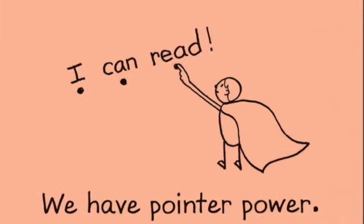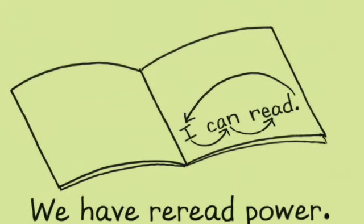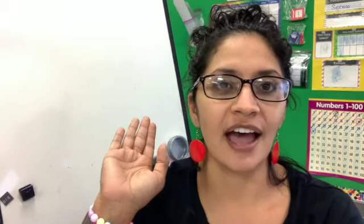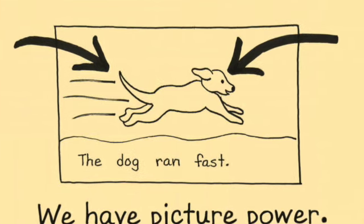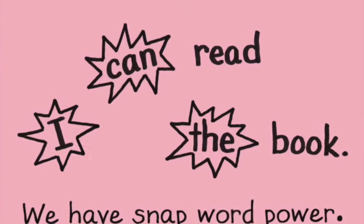Let's review all of the superpowers we've been learning this week. We have pointer power — we need to make sure we tap each word one time. We also have reread power — if I make a mistake, that's okay. We just take that pointer power, go back, rewind, and read it again, because we want to be super readers. We have partner power — take somebody you love and ask them, 'Will you read with me? Will you be my super reader partner?' And then we also have picture power — that's when we look at the picture and think before we go to the words, or when a word is giving us trouble.